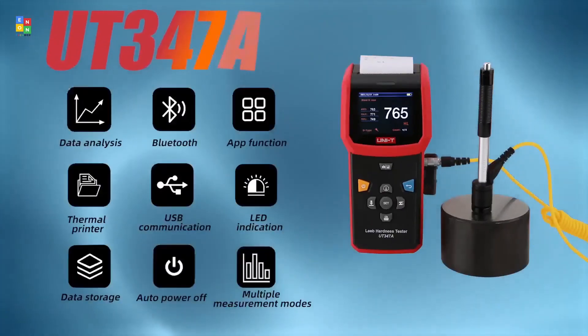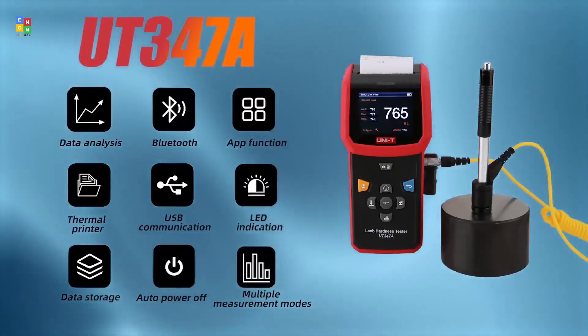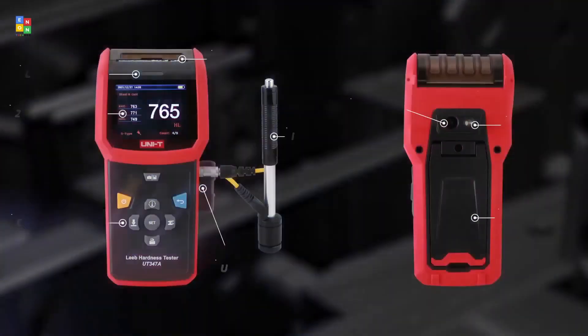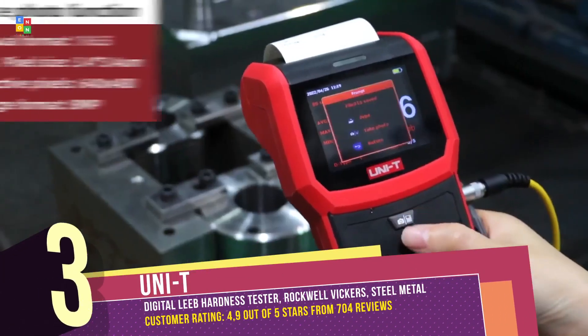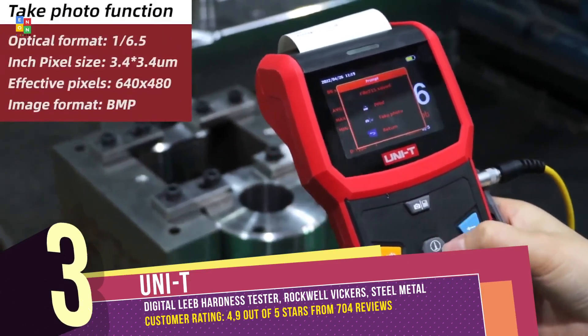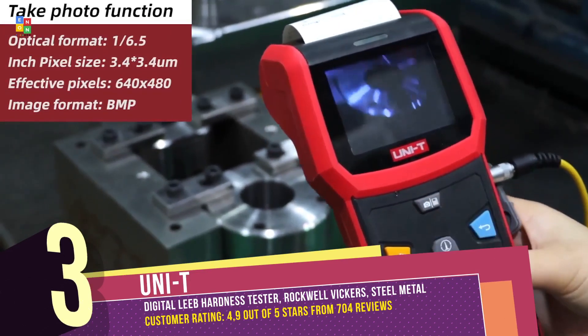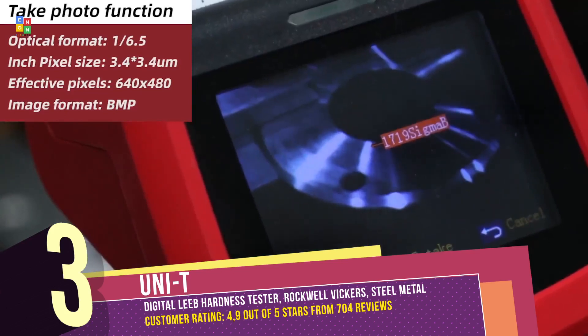Uni-T UT347A Digital Lieb Hardness Tester, a compact and accurate device designed for field hardness testing of large equipment. With real-time measurement for 6HL values, automatic identification of impact devices, and versatile measurement modes, including statistical and graphical options.